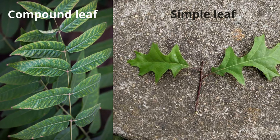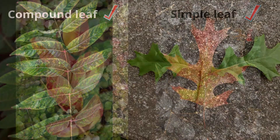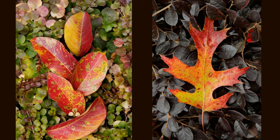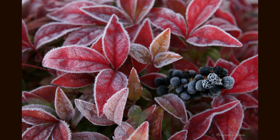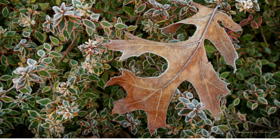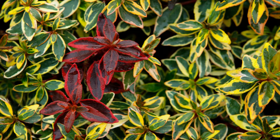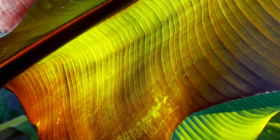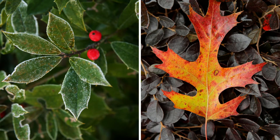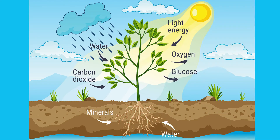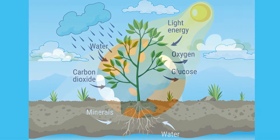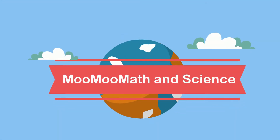Let's take a look at the difference between a simple leaf and a compound leaf. Leaves come in many shapes, sizes, and colors. Along with being beautiful, leaves are also the location of photosynthesis for plants. Welcome to Moo Moo Math & Science: simple and compound leaves.